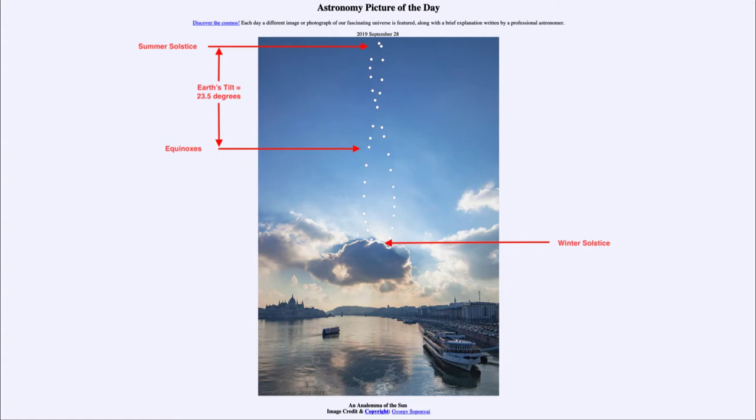Now, the other part of this is that the analemma is also elongated to the east and west directions. That is caused not by the tilt of the earth's axis, but by the fact that the earth's orbit is elliptical. That means that sometimes we are a little bit closer to the sun, and sometimes we are a little bit further away from the sun.